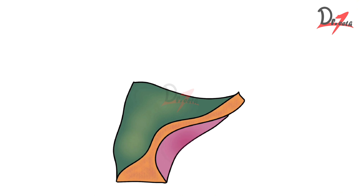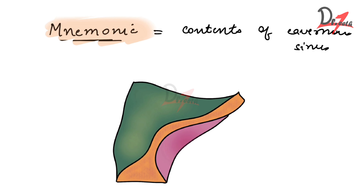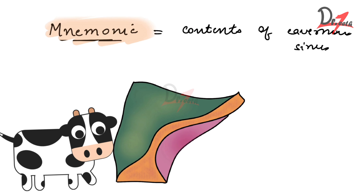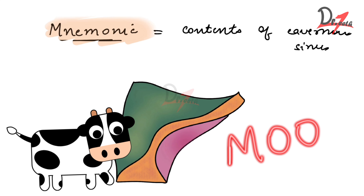Hello everyone, Assalamu Alaikum, welcome back to Dr. Teeth. In this video we are going to learn about a mnemonic to remember the contents of the cavernous sinus. Now we all know that the cow says moo, but here for this mnemonic, our cat will say moo.